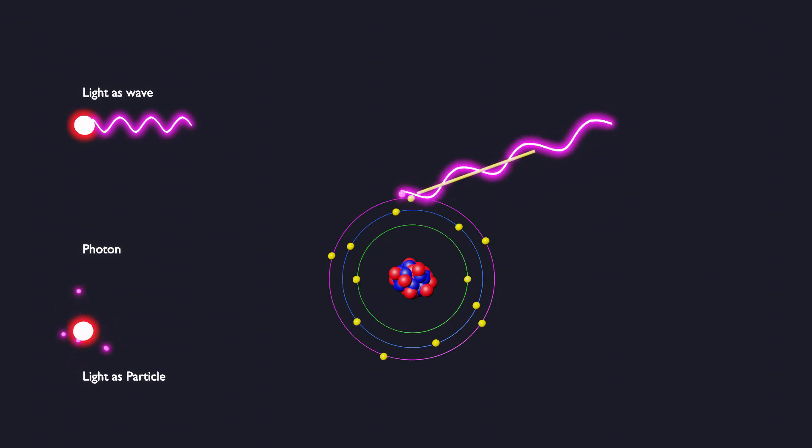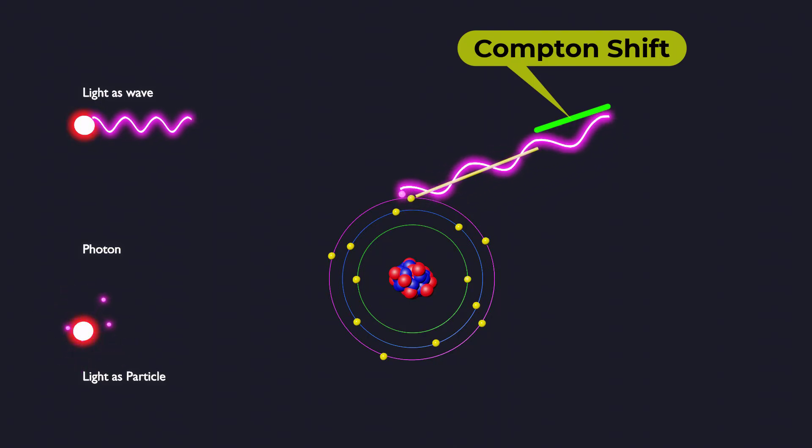As a result, the photon's wavelength becomes longer, and this change is referred to as the Compton Shift.